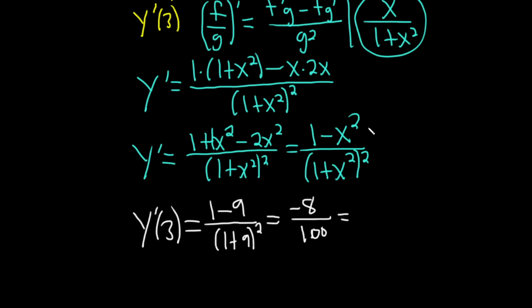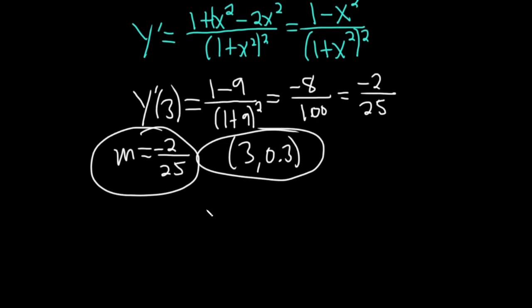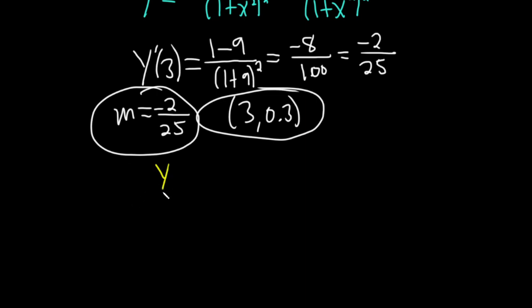Let's see, 4 goes into 8 twice and it goes into 100 25 times, so -2/25. That's the slope here. Your m is -2/25, and our point, recall, was (3, 0.3). Now that we have our point and our slope, we can find our tangent line. Recall the formula is y - y₁ = m(x - x₁).